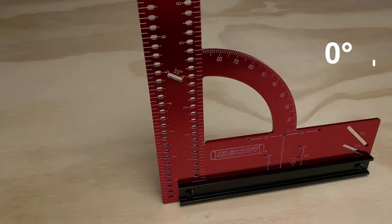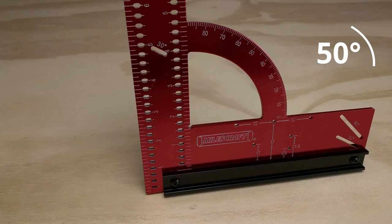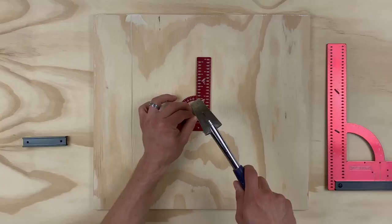Two quick angle finders let you scribe 30 and 45 degrees with ease, or make any angle up to 90 degrees using the built-in angular readout.